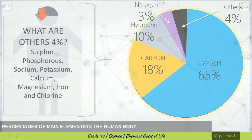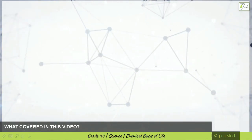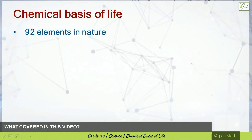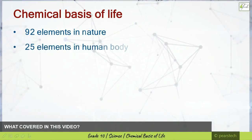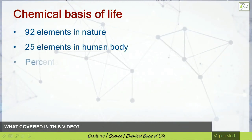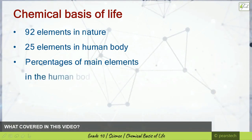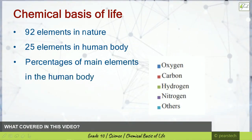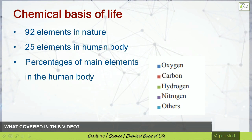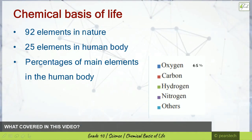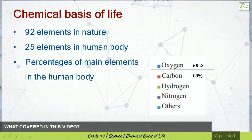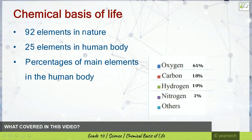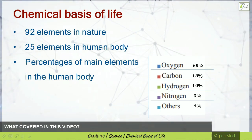So, coming to know the chemical basis of life: there are 92 elements in nature and 25 elements in the human body. The percentages of main elements in the human body are: oxygen 65%, carbon 18%, hydrogen 10%, nitrogen 3%, and others 4%.